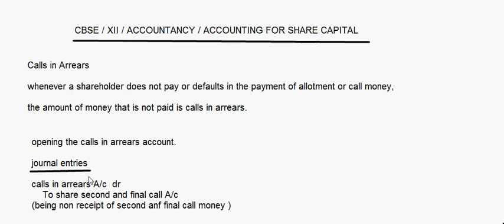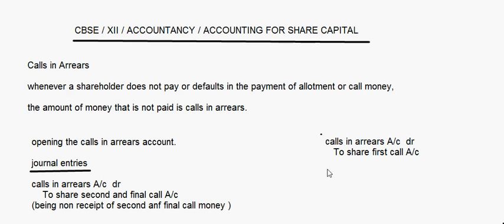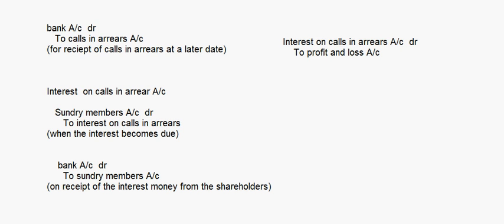First, when the money is not received, we write calls in arrears account debit, to share second and final call account. If the money had not been paid on the first call, then it would be calls in arrears account debit, to share first call account. For each call where shareholders have defaulted, you put a calls in arrears entry. For example, 200 shareholders defaulted on the first call and 100 on the second — you write both entries accordingly. When they pay, it is bank account debit, to calls in arrears account.